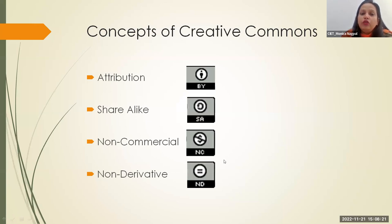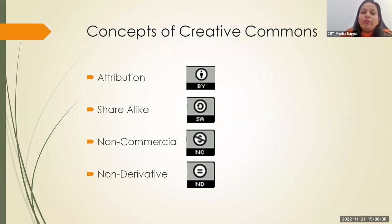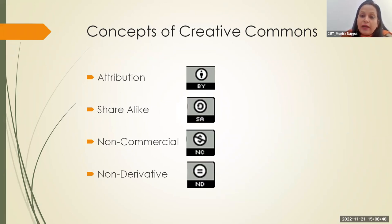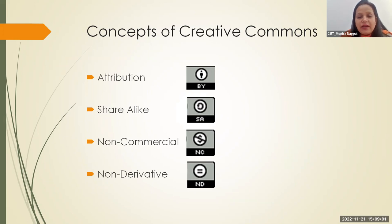If the Non-Commercial restriction is not present, you can use it commercially. The fourth right is Non-Derivative (ND), shown by an equals sign — this means you cannot make changes to the content. You can use it, reshare it, copy it, but you cannot modify it. For example, NCERT textbooks are not allowed for modification by others because they have gone through a vetting process. Resources kept under Non-Derivative protect that integrity.